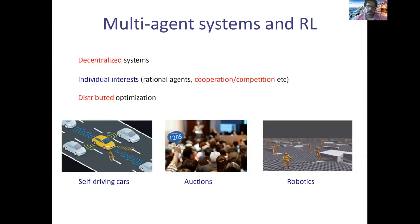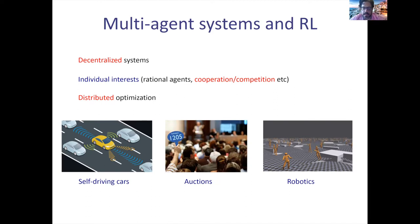What are multi-agent systems and what is reinforcement learning? It's kind of ubiquitous these days. Think of a lot of agents in a decentralized system. Every agent is rational, has its own incentives, and you might have settings with cooperation or even competition. Because every agent takes decisions for himself, you have some sort of distributed optimization.